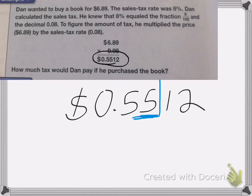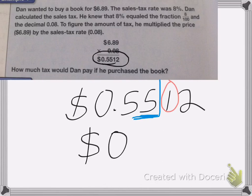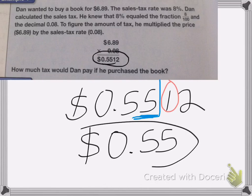To do that, we look at the next number — it's a one. So in this case, I'm not going to change my five; I'm going to leave that the same. So my answer would be he has to pay 55 cents. I would just erase those last two numbers.